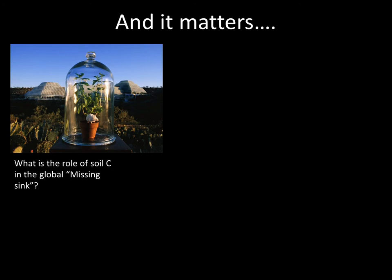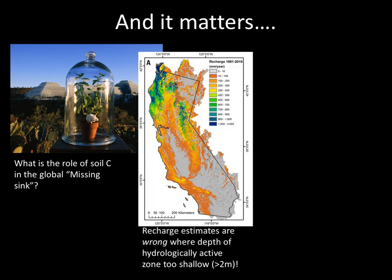This somewhat superficial understanding of the subsurface is a problem. For example, how can we understand the role of soil carbon in the global missing sink if carbon is not measured across multiple depths? An example from California: we can't make our hydrological models work because soil mapping says the hydrologically active zone is only two meters deep, which is incorrect — trees can get their roots down 10 meters deep, and the partitioning of water between recharge and evaporation goes all wrong.